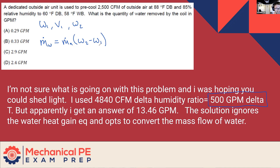This applies in the case of dehumidifying, which is what's happening here. We're running air over a coil, cooling it past its dew point, and stripping moisture out of that air — so we can calculate how much condensate is being removed. It would also be true if we were adding moisture to air with a humidifier, where the humidity ratio goes in the other direction, and we find the mass flow rate of water being added.